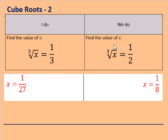For the We Do, 1 times 1 times 1 equals 1 on the top, and 2 times 2 times 2 equals 8 on the bottom, giving x equals 1 over 8. Please copy that down into your books and give yourself a tick in green pen if you did it independently. If you got it right, you're doing really well — keep it up.